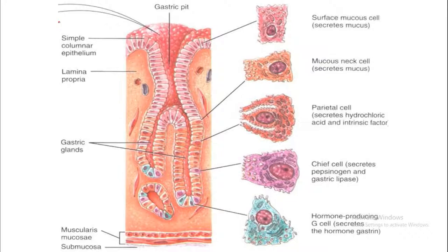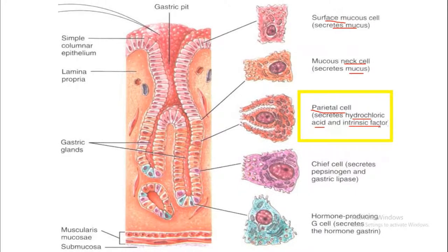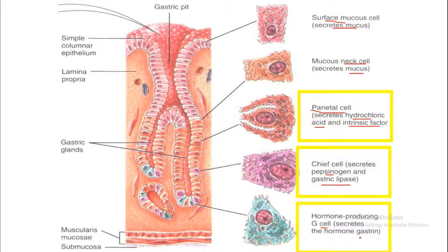This is the mucosa of the stomach. In the mucosa there are different types of cells: surface mucus cells which secrete mucus, mucus neck cells which secrete mucus, parietal cells which secrete hydrochloric acid and intrinsic factor, chief cells which secrete pepsinogen and gastric lipase, and hormone-producing G cells which secrete the hormone gastrin. These three cells and their secretions are most important.